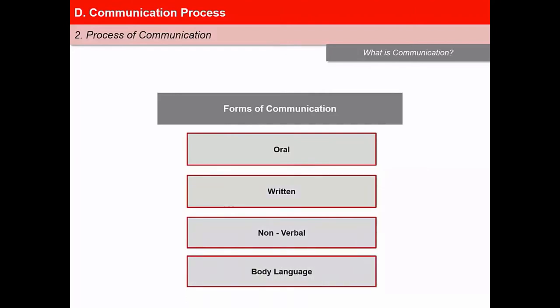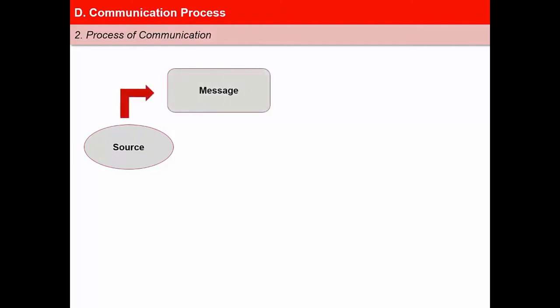Whatever the content or form of message or the media is, the essence of communication is given by what the recipient has understood as being communicated. The communication process starts with the source. As a source, the agent must be clear about why she is communicating, what she wants to communicate, and must be confident that the information is useful and accurate. Second is message, which is the information that one wants to communicate. Third is encoding, which is the process of transferring the information into a form that can be sent and correctly decoded at the other end.